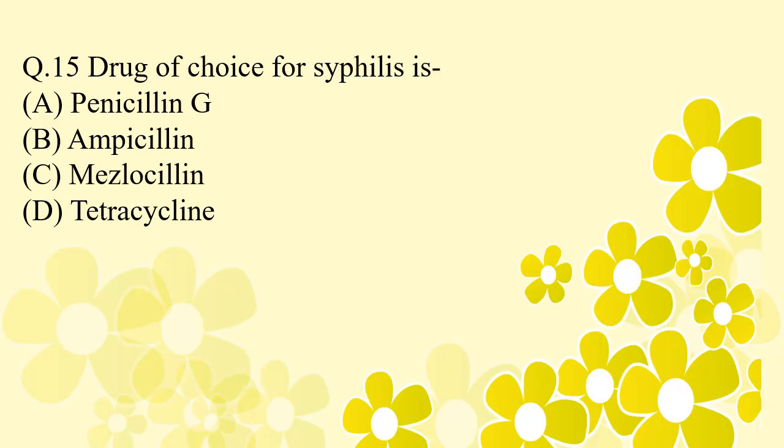Question 15: Drug of choice for syphilis — very important question. Options: penicillin G, option B: ampicillin, option C: mezlocillin, option D: tetracycline. The right answer is penicillin G. Penicillin G is the drug of choice for syphilis.